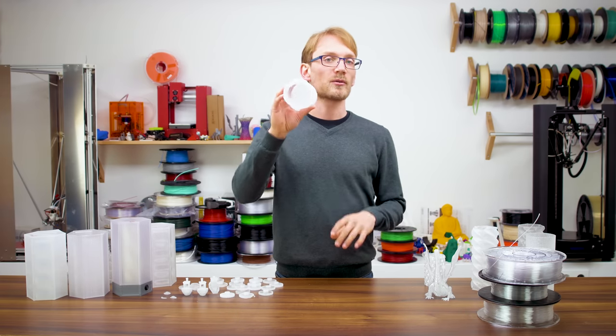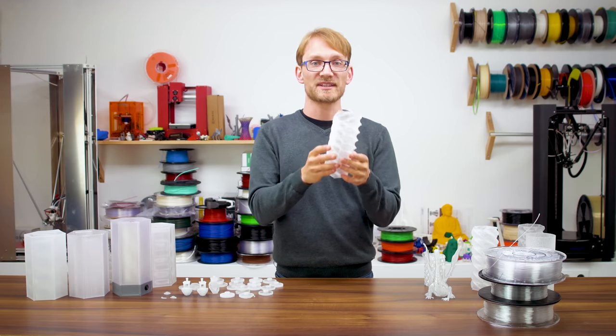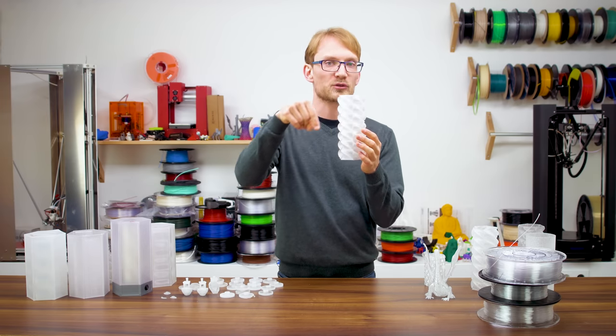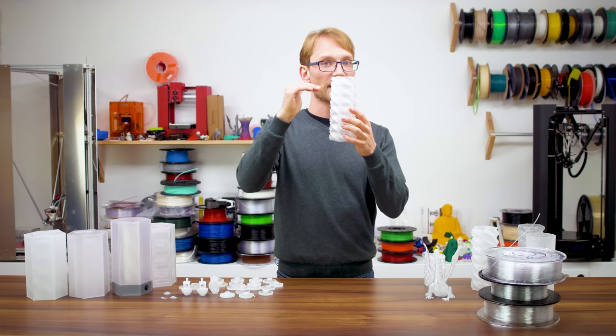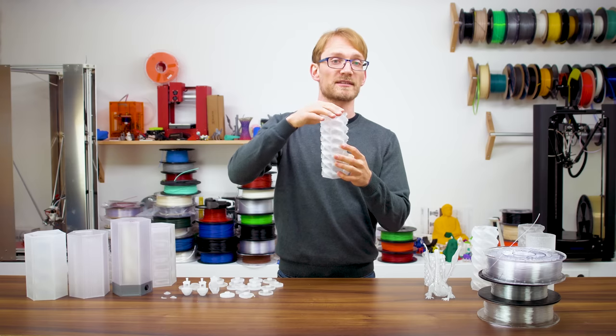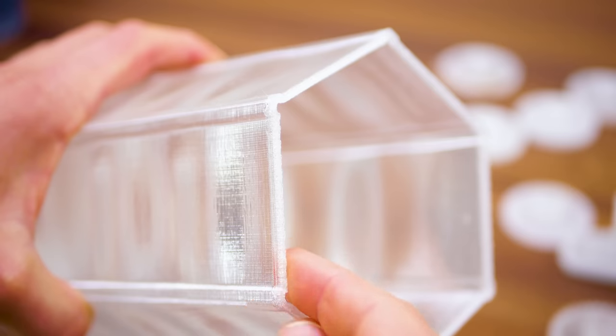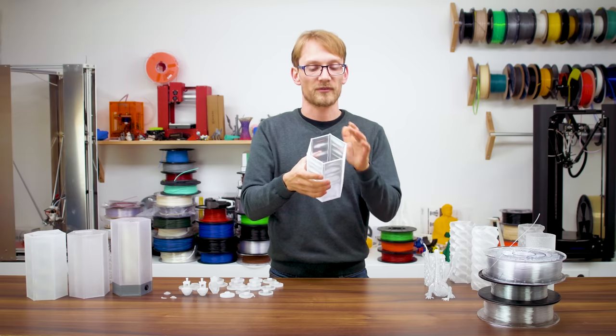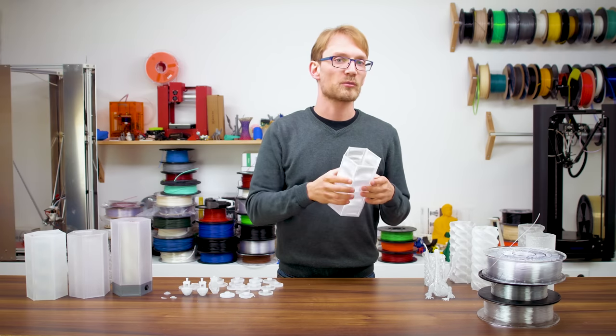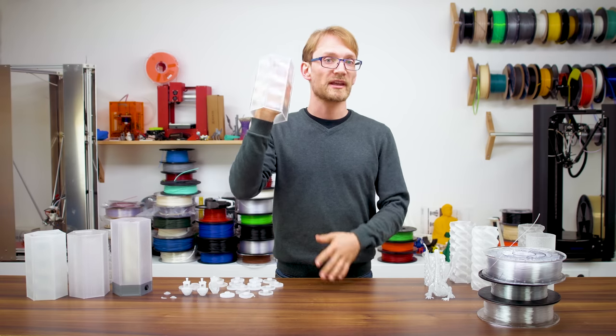These are all single-wall parts. Most of these you could print with vase mode, which is a print mode that turns the entire print into one long extrusion line. Instead of having discrete layers, it just continuously keeps moving the hotend up as it lays down plastic, so it's one long spiral. However, this shroud does have a ridge up here, which usually can't be printed cleanly with vase mode. But that's not the point here.